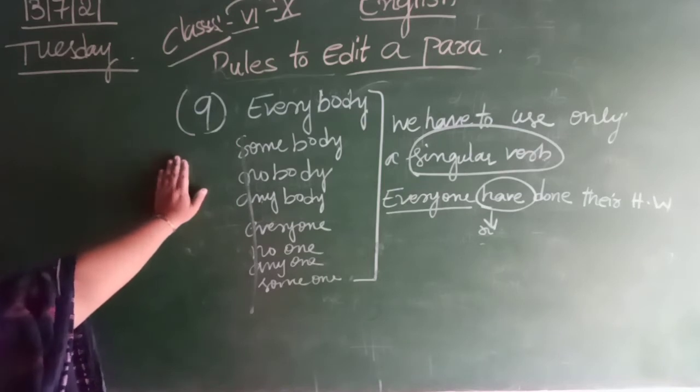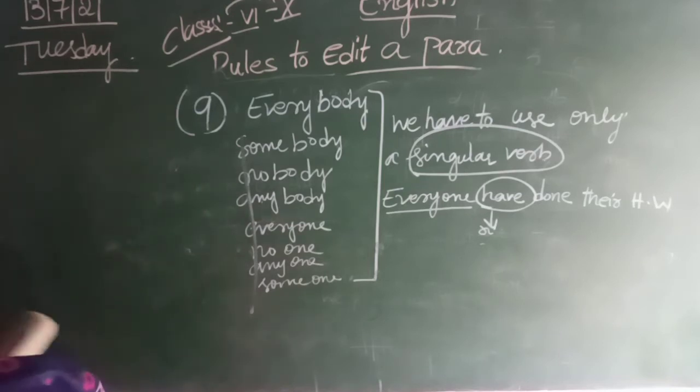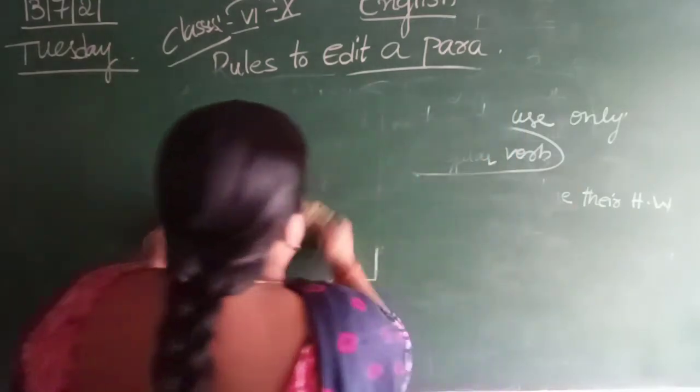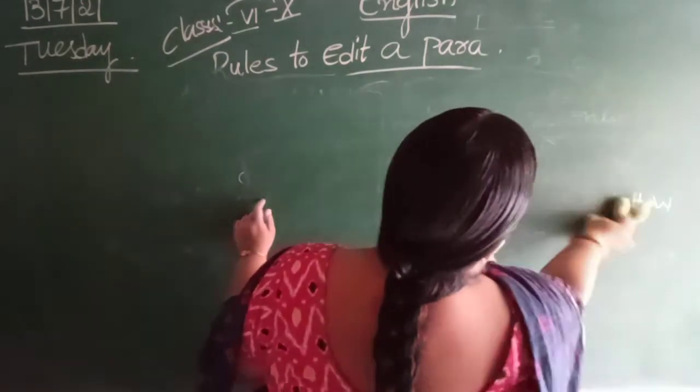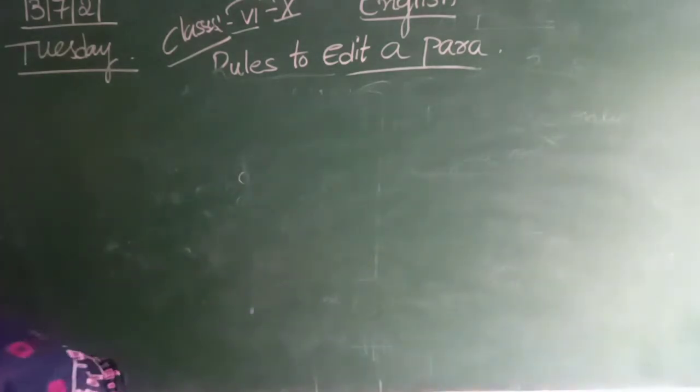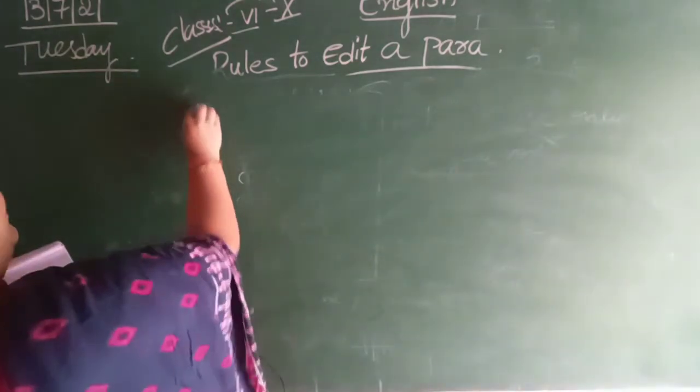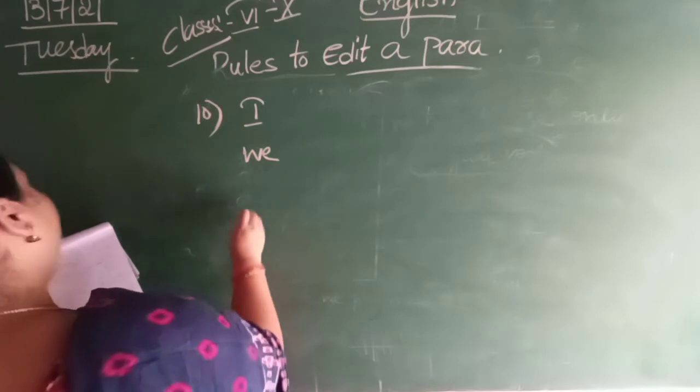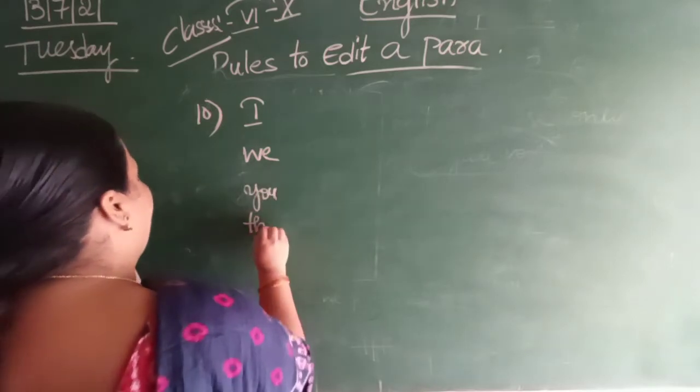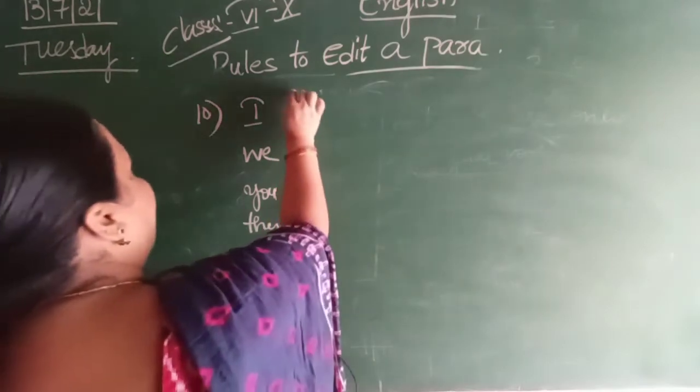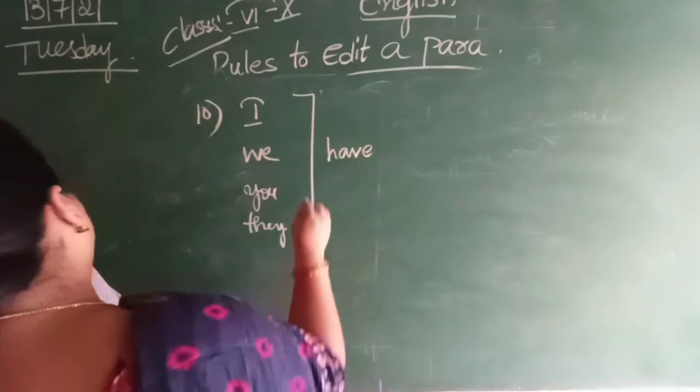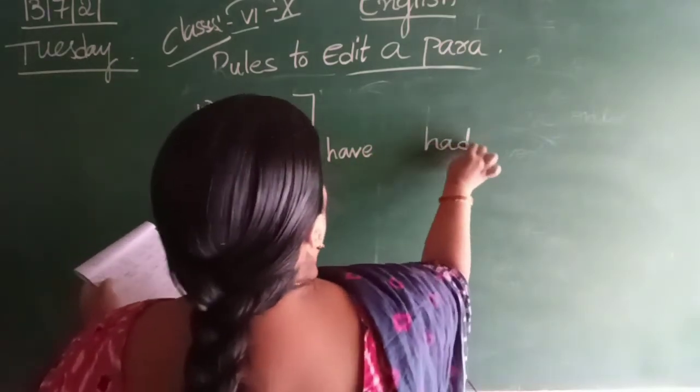The last rule, rule number ten. Okay last one, by this we will be completing 10th rule. Rule number ten. 10th one. I, we, I, V, you, they. So when we get these sentences we are going to use have. Okay. Have. So if it is in present tense then we will be using have. If it is in past tense we will be using had.